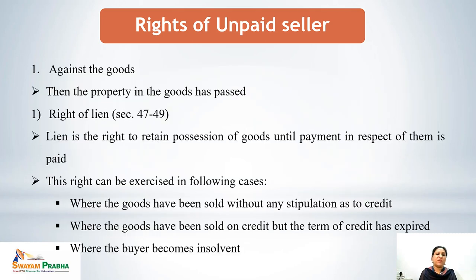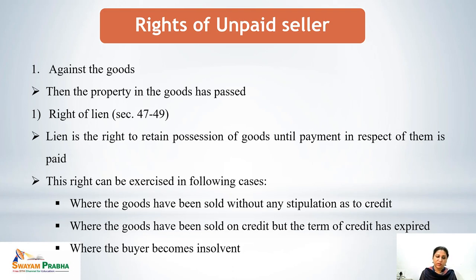Let's discuss the rights of unpaid seller against the goods. Once the property is still in the possession of the seller but ownership has been transferred, the unpaid seller has these rights. The first right is the right of lien, defined under sections 47 to 49 of the Sales of Goods Act 1930. The right of lien is to retain the possession of the goods until payment for those goods has been made. This right can be exercised when the goods have been sold without any stipulation as to credit.